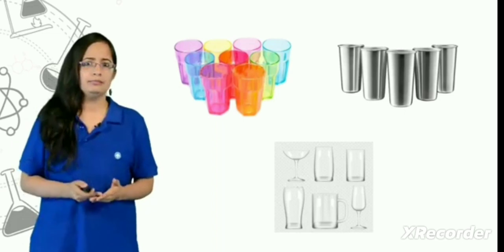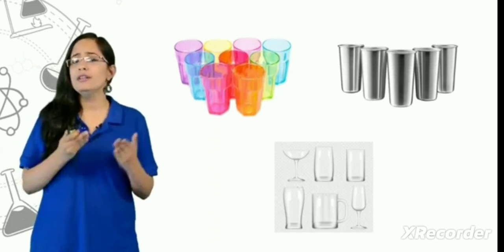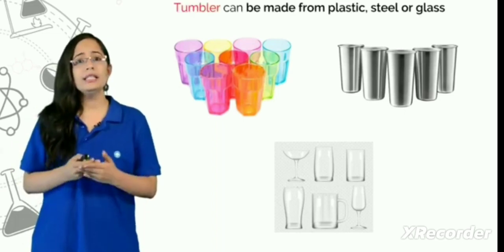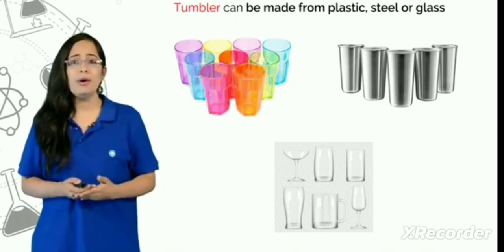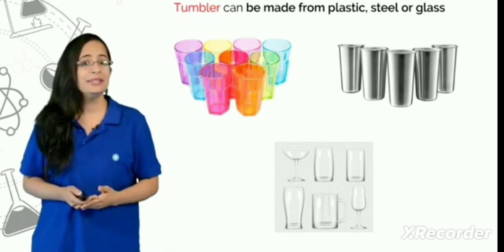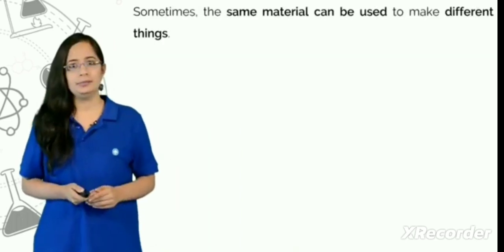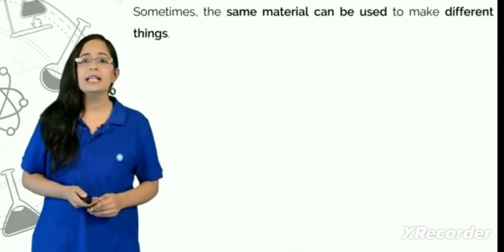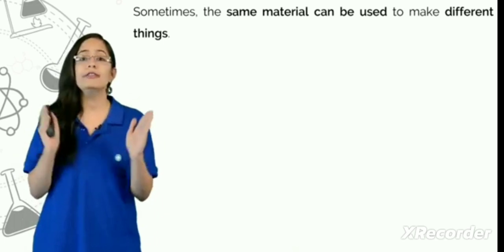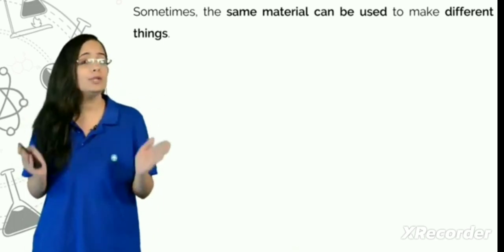For example, a tumbler. This tumbler can be made up of different kinds of materials. For example, this tumbler can be made up of plastic, steel, or glass. So, another important thing to note here is that the same material can be used to make different things, different objects.